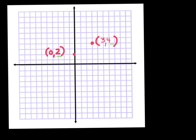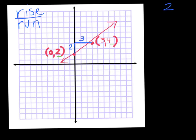We are going to try to find the slope of a line that goes through these two points. Previously when we found slope, we know that to find the slope it's rise over run. So quickly I'm just going to count the rise and the run. I'm going up two — there's my rise — and over three. So my slope is two over three. Looking at the line from left to right, it's going up, so it's a positive two-thirds.